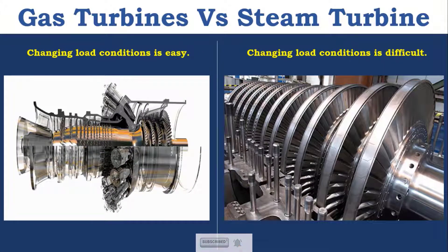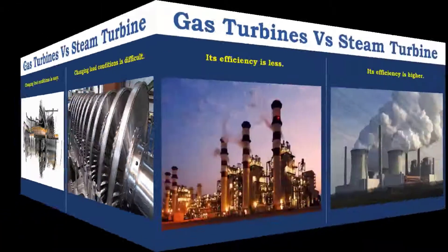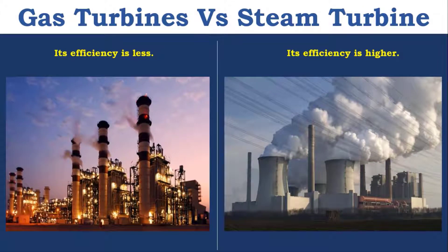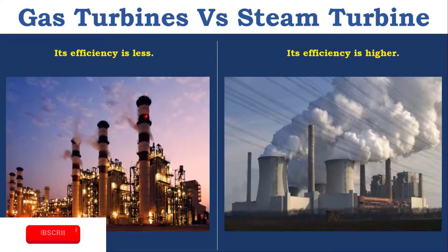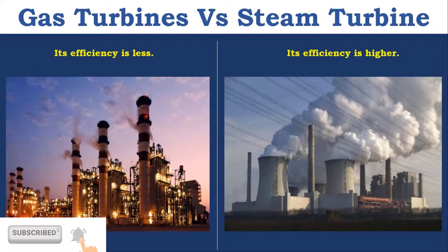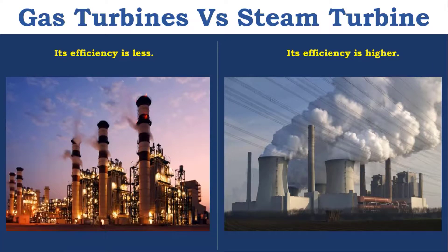Changing load condition is easy in Gas Turbine and difficult in Steam Turbine, because we have to go for governing. By controlling the fuel supply, you can change the load conditions. The efficiency is less in Gas Turbine and more in Steam Turbine, because the power produced by the turbine is used to run the compressor — 70 to 75% of power. Such a case is not there in Steam Turbine. That's why Steam Turbine's efficiency is more compared to Gas Turbine.